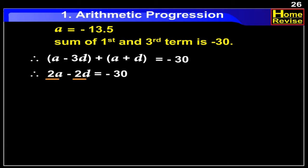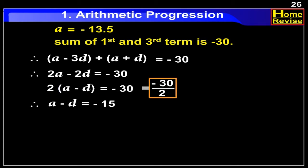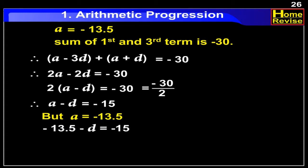Taking out 2 common, we have 2(a minus d) is equal to minus 30. Therefore, a minus d is equal to minus 15. But we know that a is equal to minus 13.5. Putting this value, we get minus 13.5 minus d is equal to minus 15.